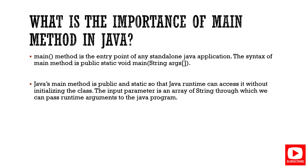Next question: what is the importance of the main method in Java? The JVM looks for the main method as the entry point for any standalone Java application. The syntax is: public static void main(String[] args). It is declared public static so Java runtime can access it without initializing the class, and the String array argument allows passing runtime arguments.